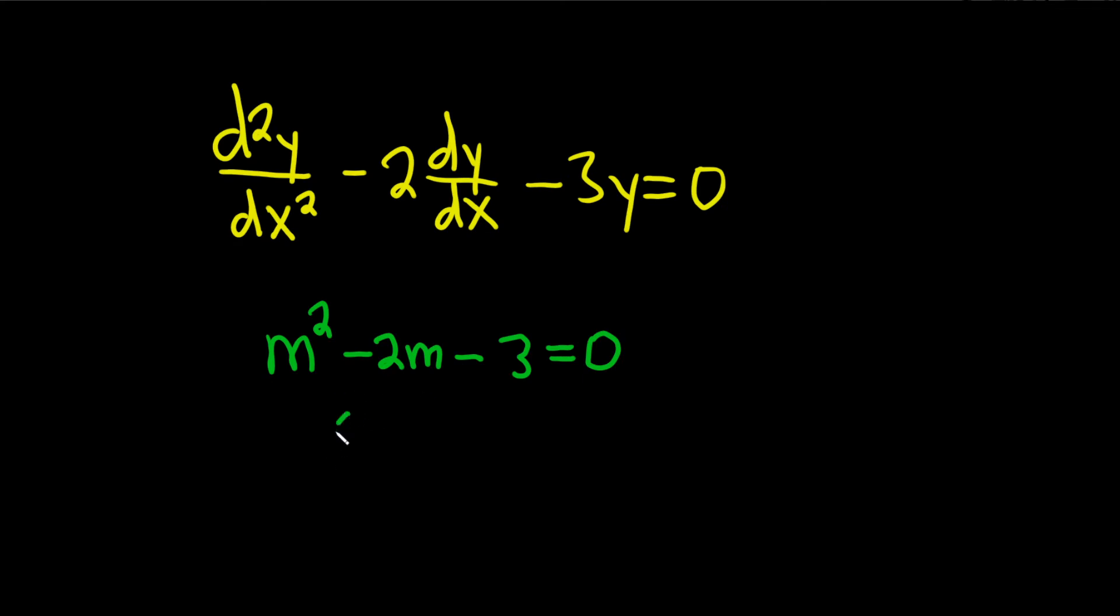Then we try to solve it. I believe this will factor. Let's try it. So if it does, it will look something like this. And so we need two numbers that multiply to negative 3 and add to negative 2, so 3 and 1. And the negative should be in front of the 3, because if you add negative 3 plus 1, that will give you negative 2.